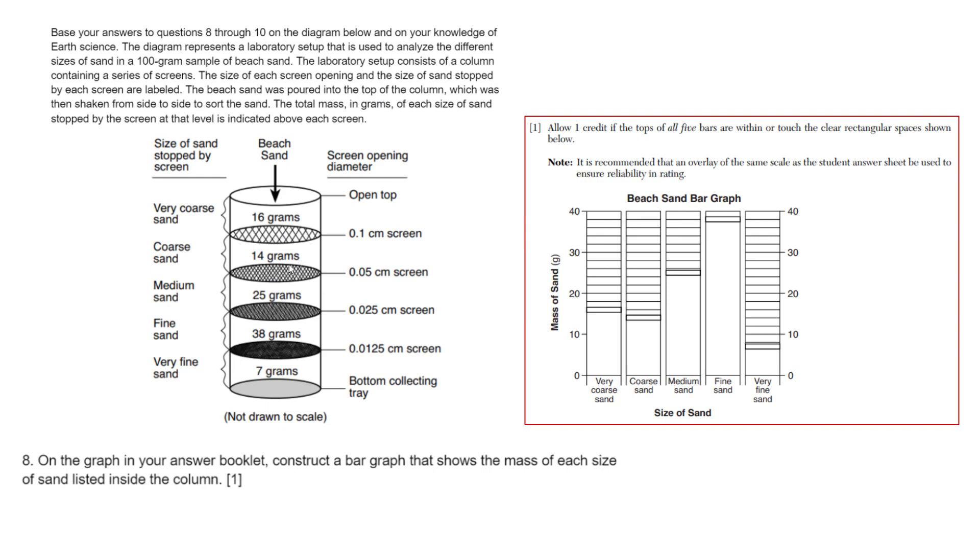Notice that the very coarse sand, coarse means larger particles of sand, are stuck in the top parts. And as we go lower, we're getting finer sand, meaning smaller grains of sand. So the smaller grains of sand are going through and stopping here, and the larger grains of sand are getting stuck here. We're separating them by size by doing this.